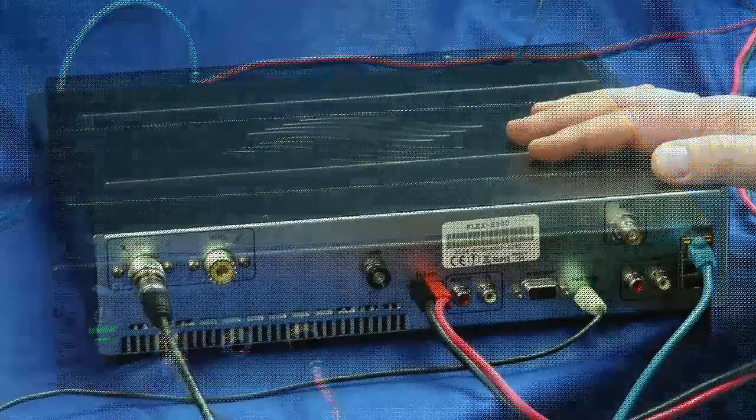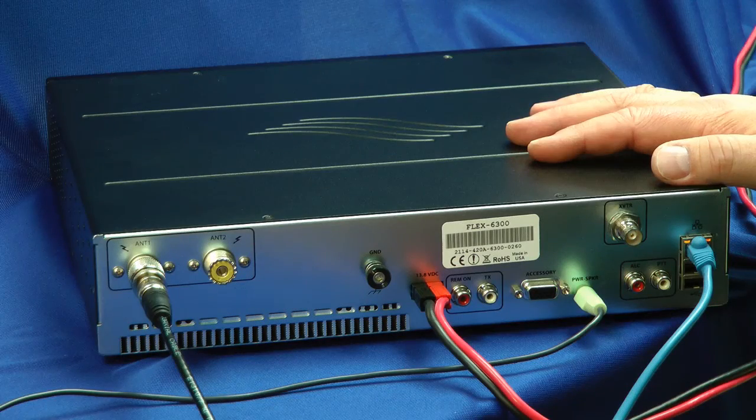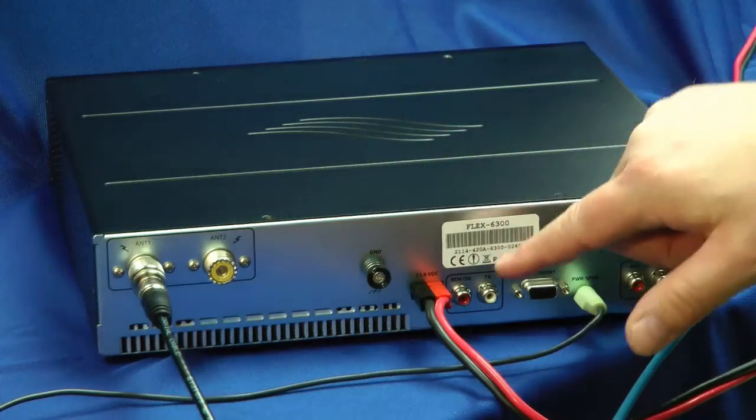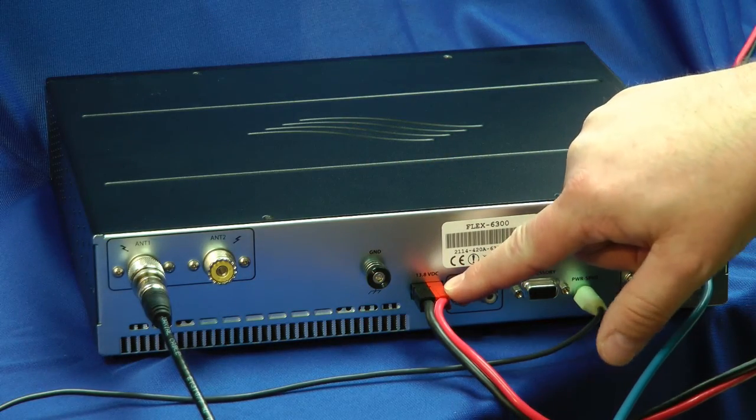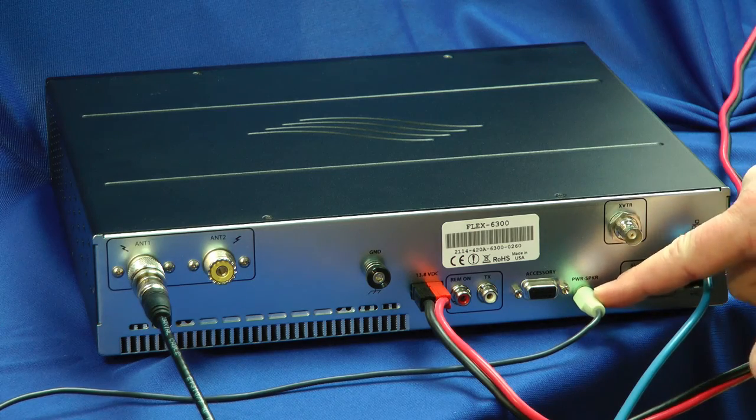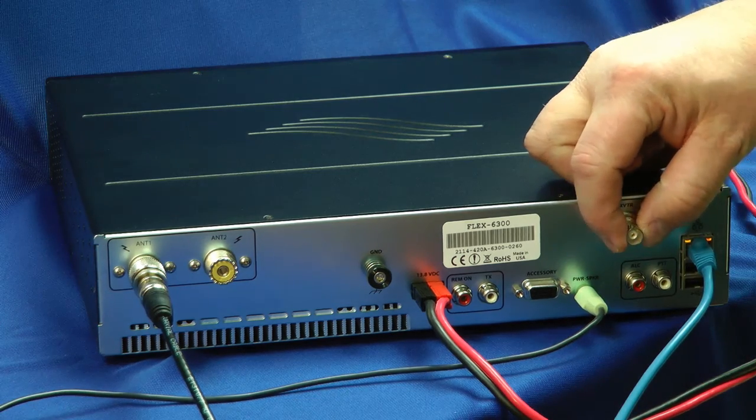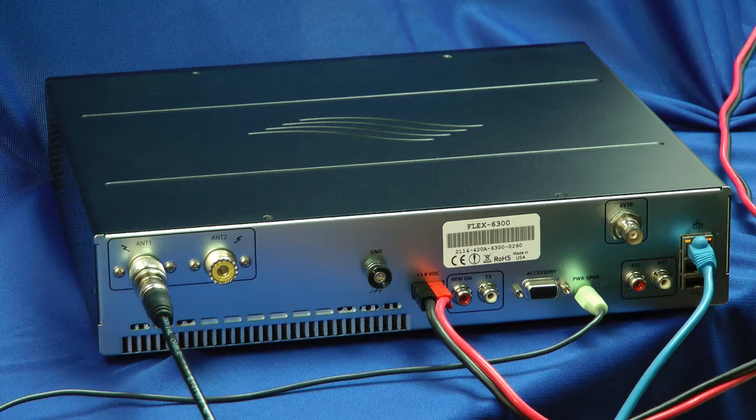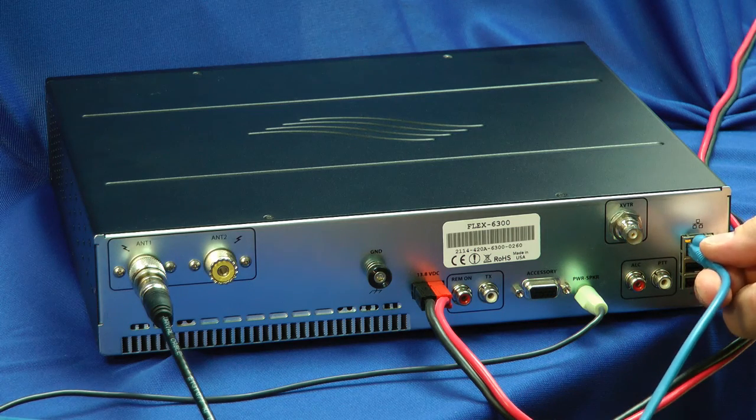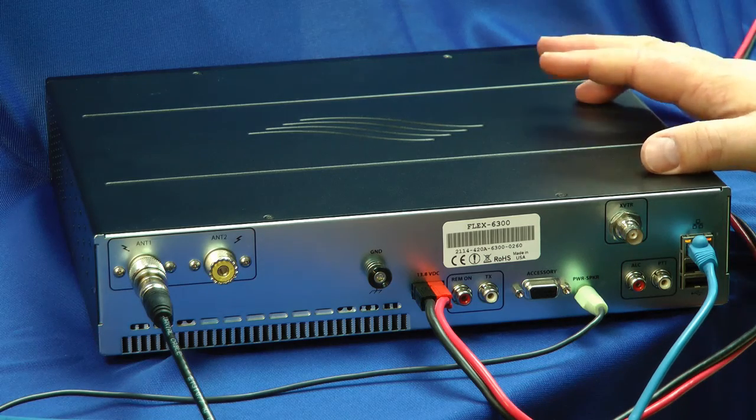Let's take a look at the back side. Well, not too much to see back here. The connections are rather simple. Antenna jacks, ground connection, DC Anderson power pole connection, some remote connections, accessory. This is where you plug your speakers into. A transverter jack, push-to-talk and ALC for your amplifier, and of course the ethernet connection for your PC that runs the FlexRadio.